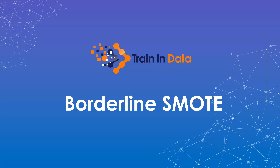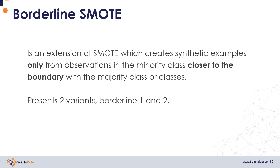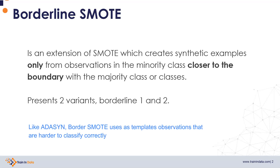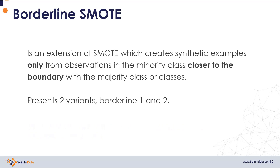In this video we are going to discuss in more detail a variation of SMOTE called Borderline SMOTE. Borderline SMOTE creates synthetic examples only from observations in the minority class that are closer to the boundary with the majority class, because observations closer to the boundary are the hardest to classify. Therefore we should augment this population mostly, to allow the algorithm more examples to learn from and discriminate the classes.